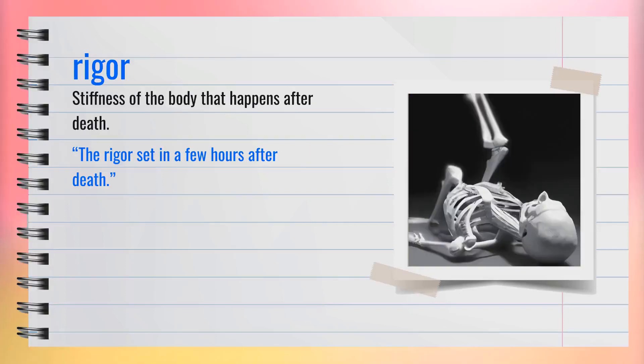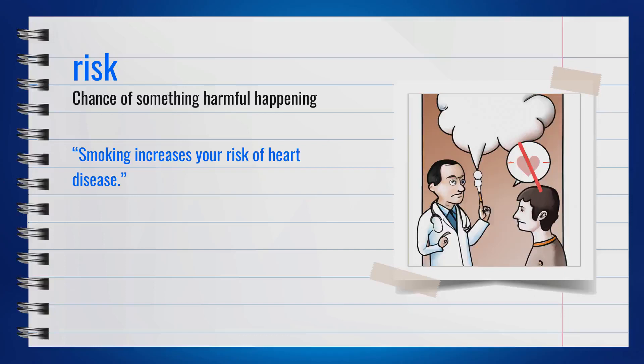The word rigor, spelled R-I-G-O-R, is a noun. It refers to the stiffness of the body that happens after death. For example, the rigor set in a few hours after death. Rigors help forensic experts determine the time of death.